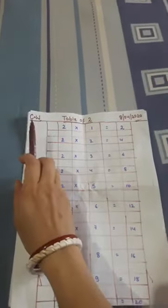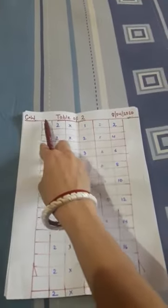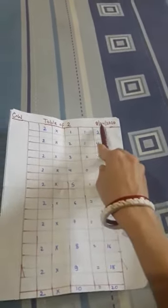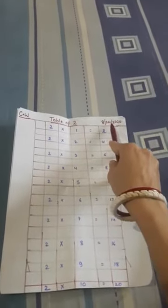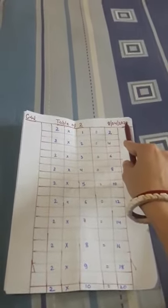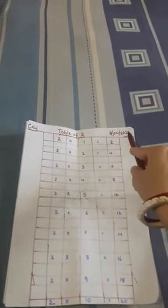First of all write down CW, CW above this line. And now write down date in this direction. 8-4-2020. Today date is 8-4-2020.